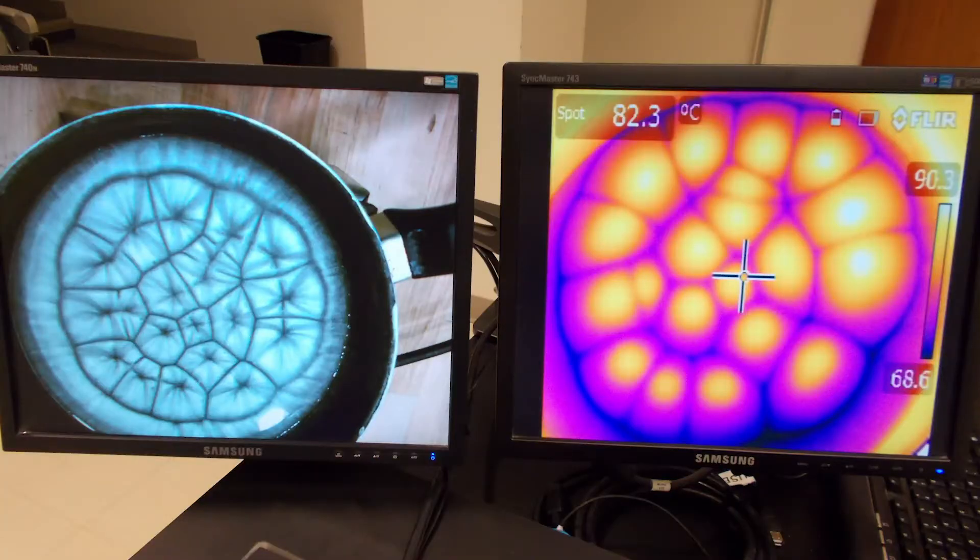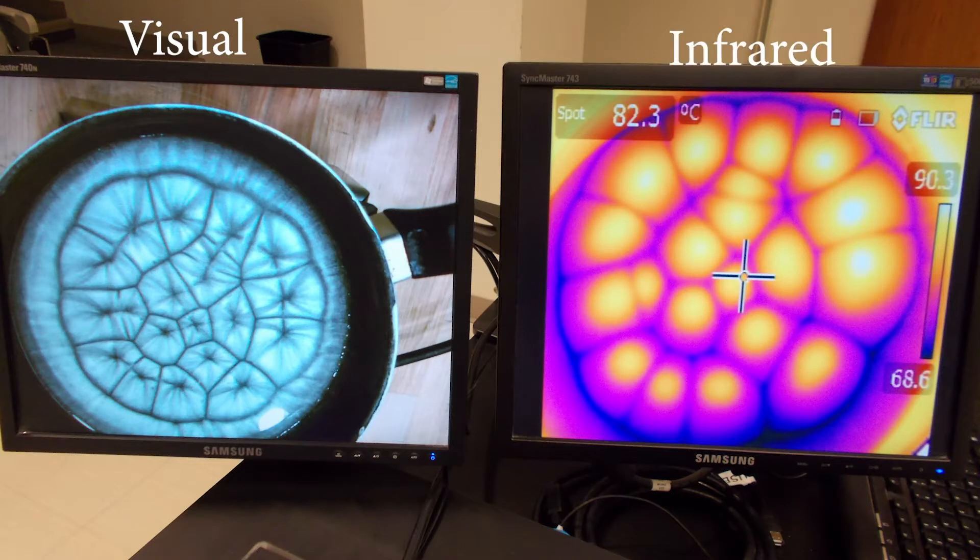Here you can see two screens with a visible image on the left and an infrared image on the right of the convection cells in the silicone oil. Realize that in the infrared image, temperature is indicated by color.